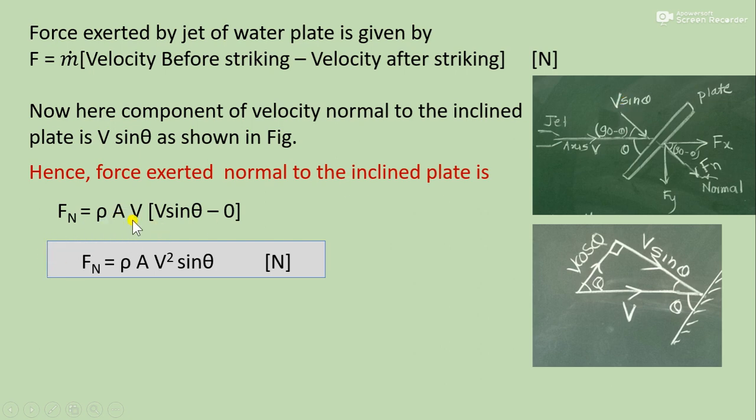So Fn equals m dot, that is ρAV, times the velocity component V sin θ before striking minus after striking velocity component which is 0. Thus final expression for the normal force is ρAV² sin θ. Its unit is Newton.